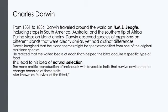Soon after, his botany professor recommended him to Captain Robert Fitzroy, who was preparing the survey ship the HMS Beagle for a voyage around the world. It was a tour that would have a profound effect on Darwin's thinking and eventually on the thinking of the entire world. Darwin was 22 years old when he sailed from Great Britain on the Beagle in December of 1831. The main mission of the voyage was to chart poorly known stretches of the South American coastline. Darwin spent most of his time on shore collecting thousands of specimens of fossils and living plants and animals.